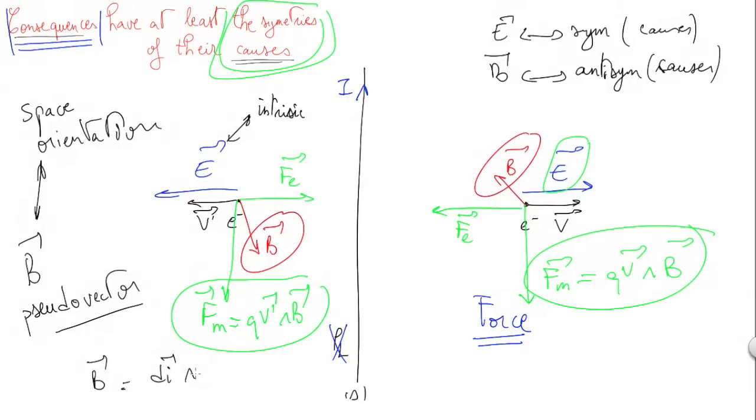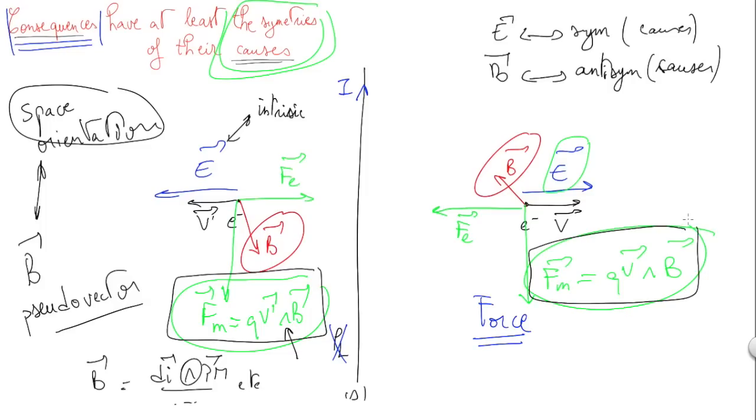Remember that when you compute the magnetic field, you use a vectorial product. With the other vectorial product you use to compute the force, you compensate this dependence on space orientation. Thus, the only thing you would care about when considering symmetry is forces, and whenever forces are symmetric, you are sure to be respecting Curie's symmetry principle.